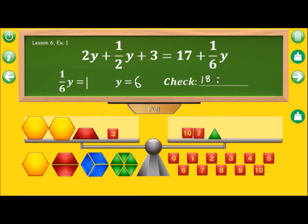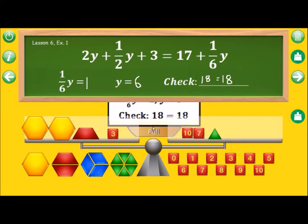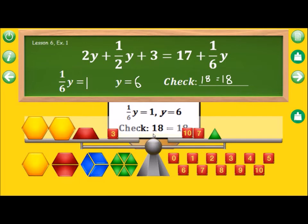Now let's see what the right side is. 17 plus the green block. Well, one sixth of y is one. 17 and one is 18, so both sides do have the same value. And therefore, this is the solution. One sixth of y is equal to one, y is equal to six, and the check is equal to 18 equals 18. You can also pull down the answer tab to verify your result.